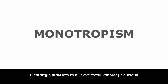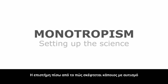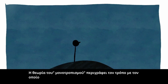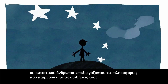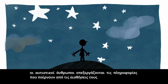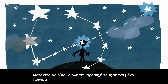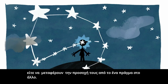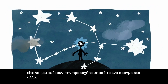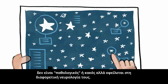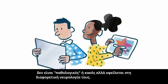Monotropism. Setting up the science. The theory of monotropism describes the way in which autistic people's neurology processes sensory information, engages with something in order to give it our full focused attention, works to move our attention from one thing to another, and validates autistic experience in a non-pathological way.